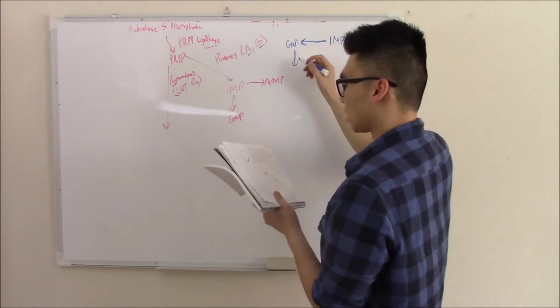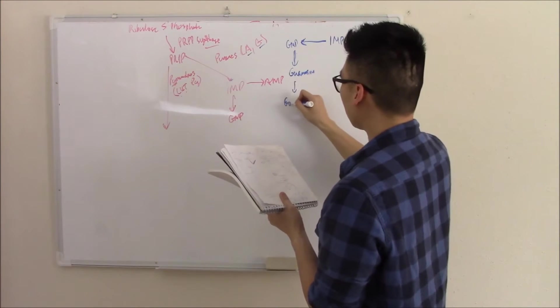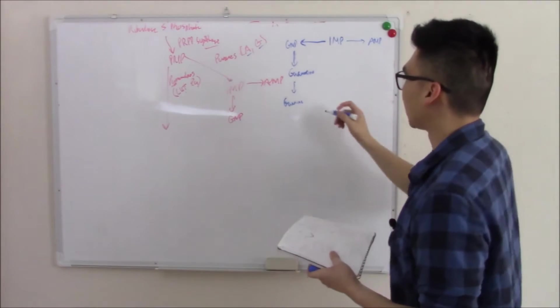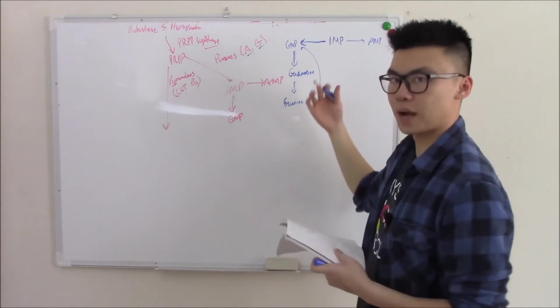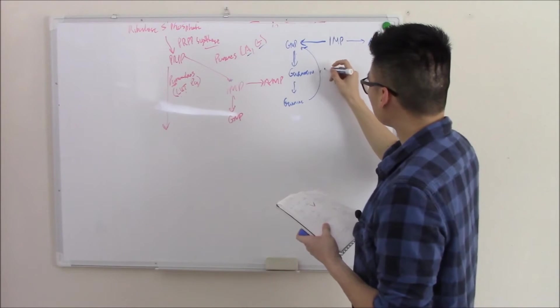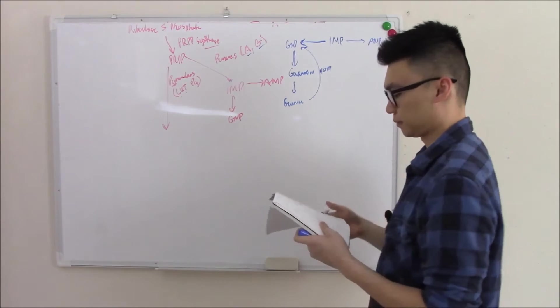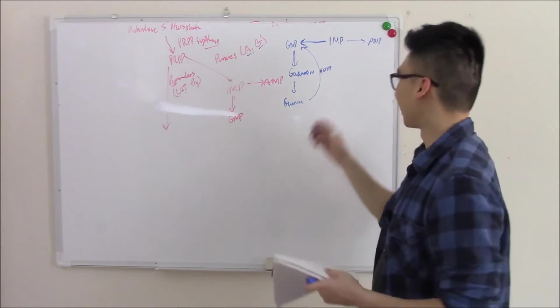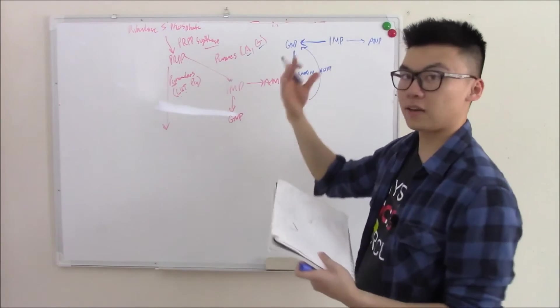And those eventually, through a couple steps, make your adenine and guanine. So GMP, through a couple steps, turns into guanosine and then finally your guanine. And the reason it's called the purines salvage pathway is because at guanine, there's an enzyme that brings it back. And that is HGPRT or hypoxanthine guanine phosphoribosyltransferase.